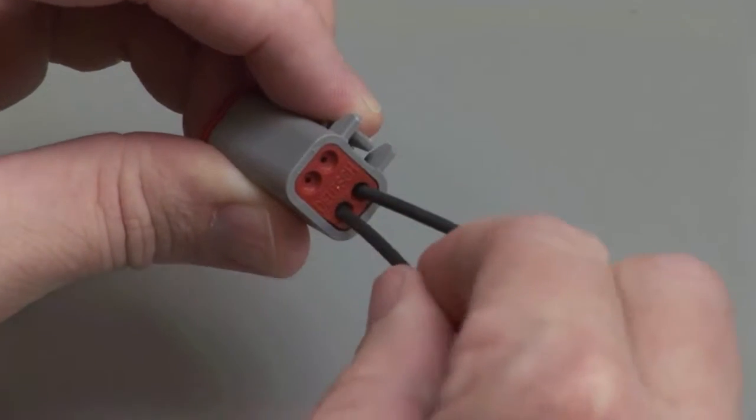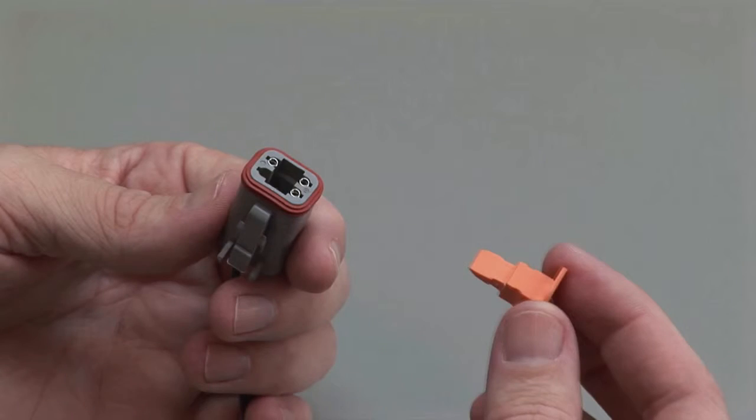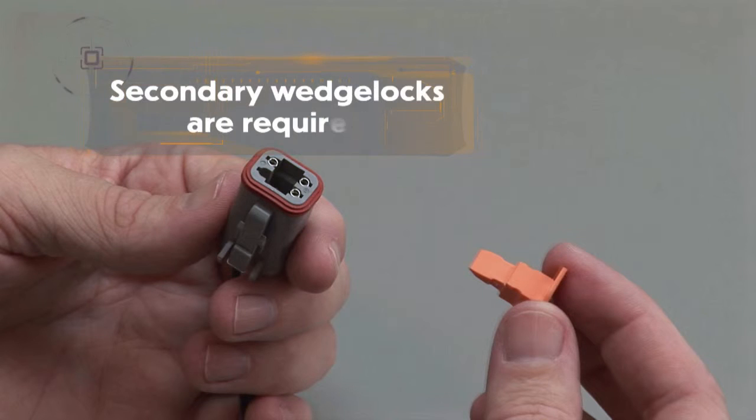When populating a DT series connector, secondary wedge locks are required. Wedge locks ensure proper alignment of the contacts.